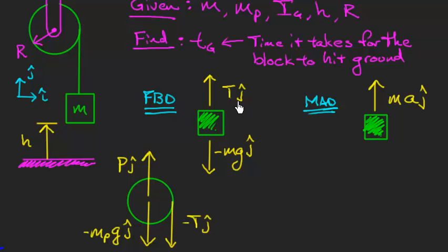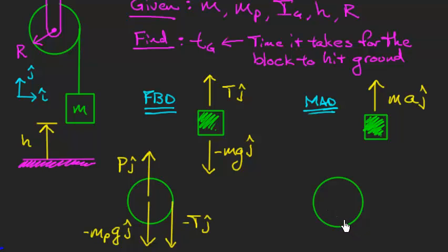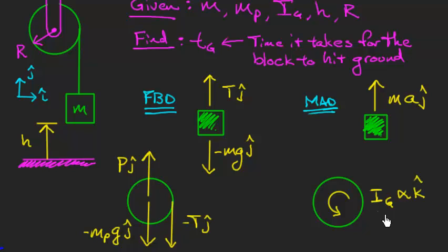That tension is the same tension in the rope, in the minus j-hat direction. For the mass-acceleration diagram of the pulley, notice that the center of mass — the pin — is not moving left, right, up, or down. So the center of mass has no acceleration by itself. But the pulley is rotating, so it has an angular acceleration. I would put an angular acceleration on this mass-acceleration diagram. Even though I know this spool will accelerate clockwise, I'll draw it counterclockwise to keep things positive. A positive angular acceleration is in the positive k-hat direction — i cross j is k coming out of the board. So positive is counterclockwise. Ig here is the moment of inertia of the spool about the center of mass.